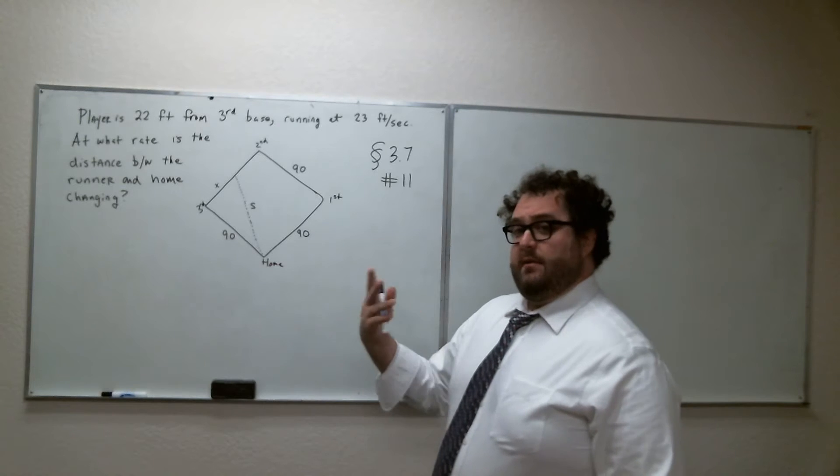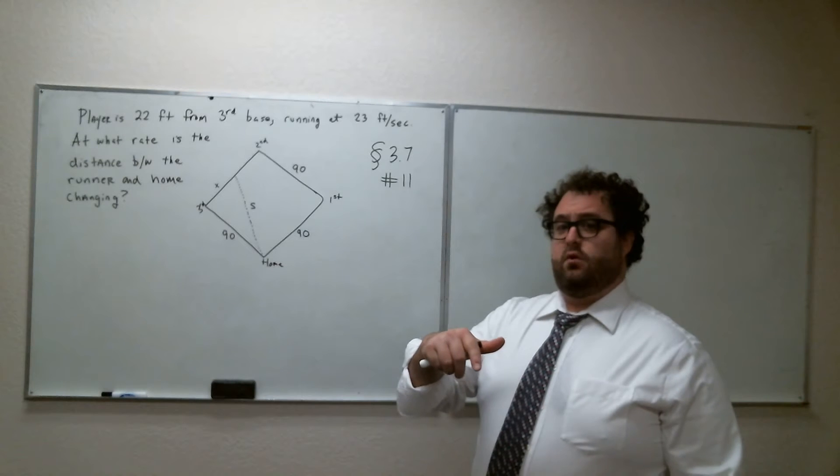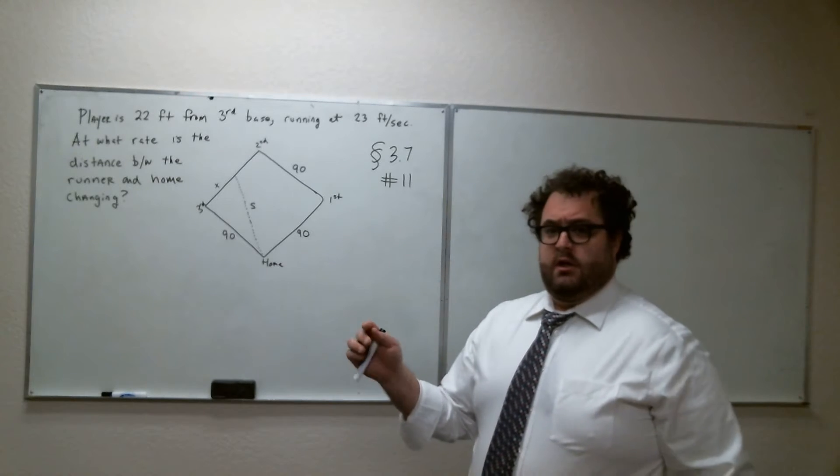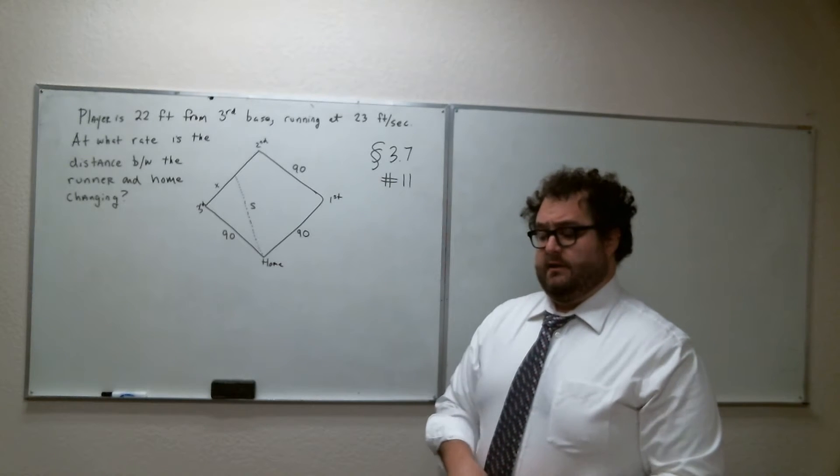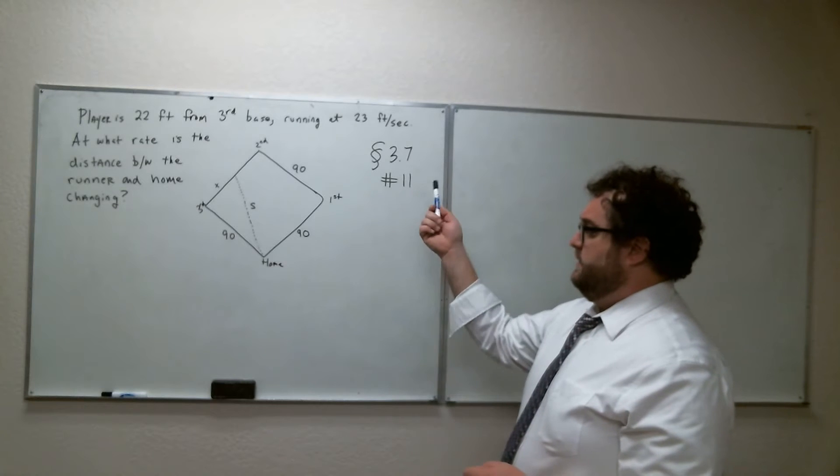3.7 is all about related rates. We've got a lot of examples by now. If you want to see lots of examples, check out a previous video I made for you, the lecture video. The lecture series has two hours worth of examples of stuff just like this. So this is just a quick question, number 11 in 3.7.